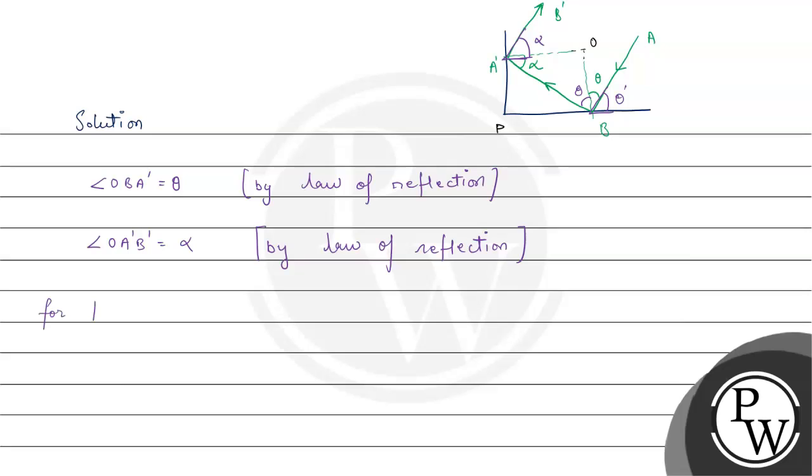For A B parallel to A dash B dash, we have alpha must be equal to theta dash. We have to prove it and we would have proven that both of these lines are parallel.